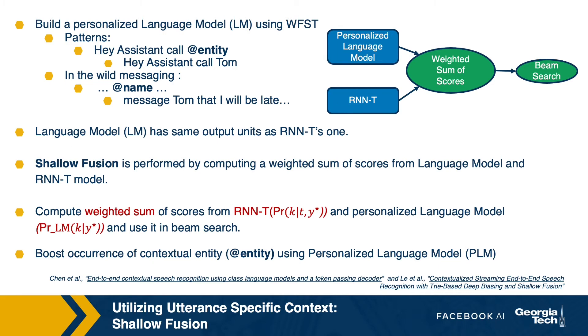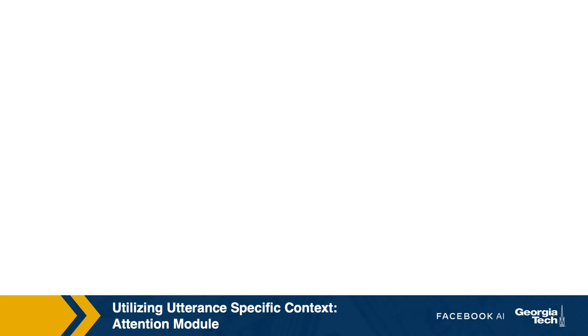In explicit boosting, we did not need to make changes in the RNNT model components. In the implicit boosting approach, we introduced a new module called the biasing module. Another module we experimented with for personalization was the attention module. This module has higher computational complexity than the biasing module. However, the ideas in the attention module can help us build truly multi-modal ASR systems. For example, if we wanted to build an ASR system conditionally dependent on the audio content, image content of a video, and relevant contextual words while transcribing the video, then the attention module can help.